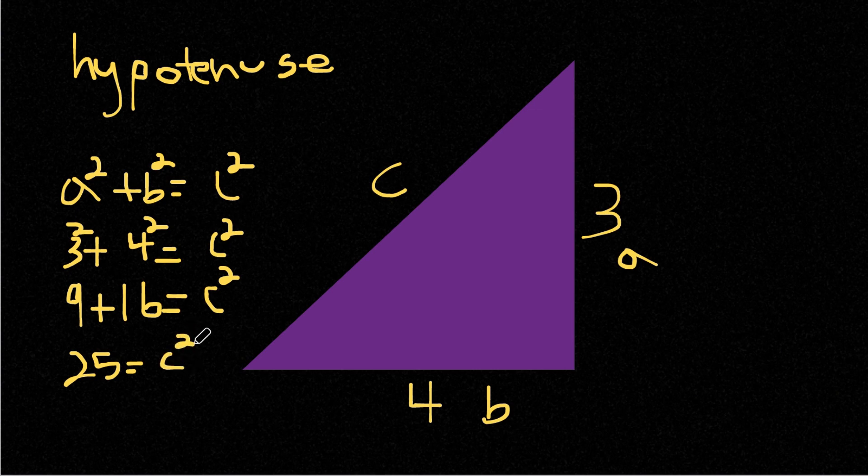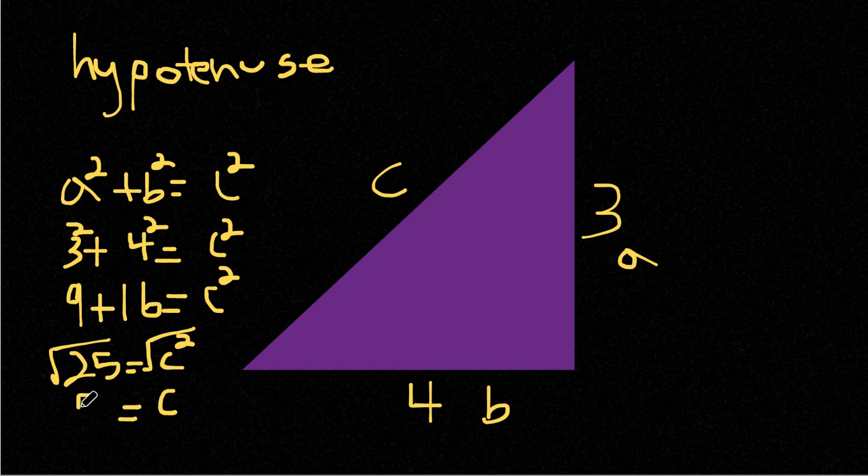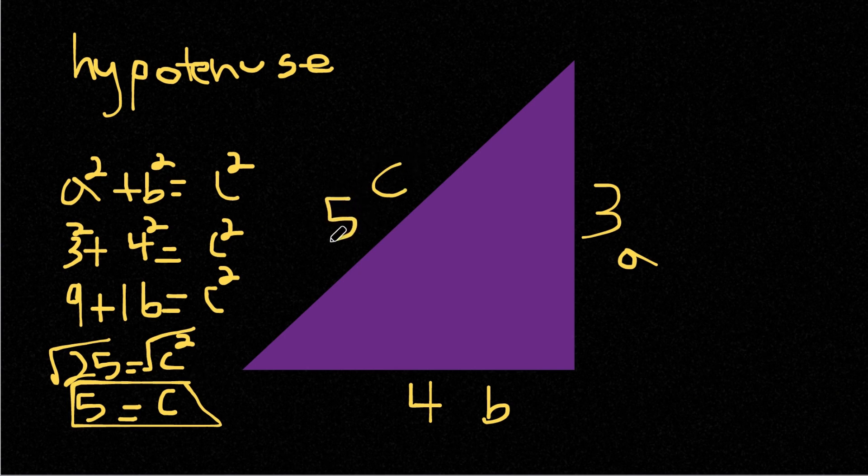Now to find C, we're going to find the square root of both sides. So the square root of 25 and the square root of c squared. This changes c squared into c equals the square root of 25 is 5. So our missing side length for our hypotenuse is 5.